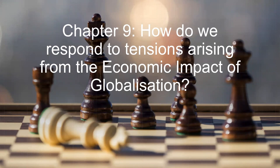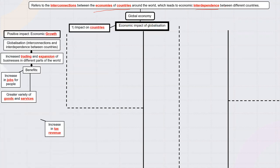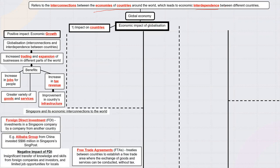Chapter 9 looks at some of the problems with globalization and how we can deal with them — specifically the economic impact. Chapter 10 covers culture, and chapter 11 covers security. For chapter 9, what are some economic impacts of globalization? Remember, globalization means every country's economy is connected and dependent on one another — if one country does well, another may do well too, or one country doing poorly can affect another. We can look at the impact at three different levels: countries, companies, and individuals.